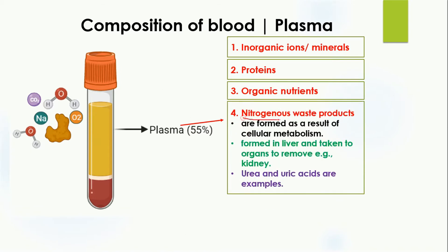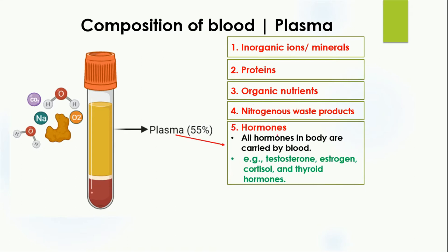The fourth component of plasma is nitrogenous waste products. These contain nitrogen and are formed as a result of cellular metabolism — during the breakdown of food, nitrogenous waste products are formed, sometimes also in the liver, and are then transported to organs like the kidney to be removed from the body. Important nitrogenous waste products include urea and uric acid, which are excreted in the urine.